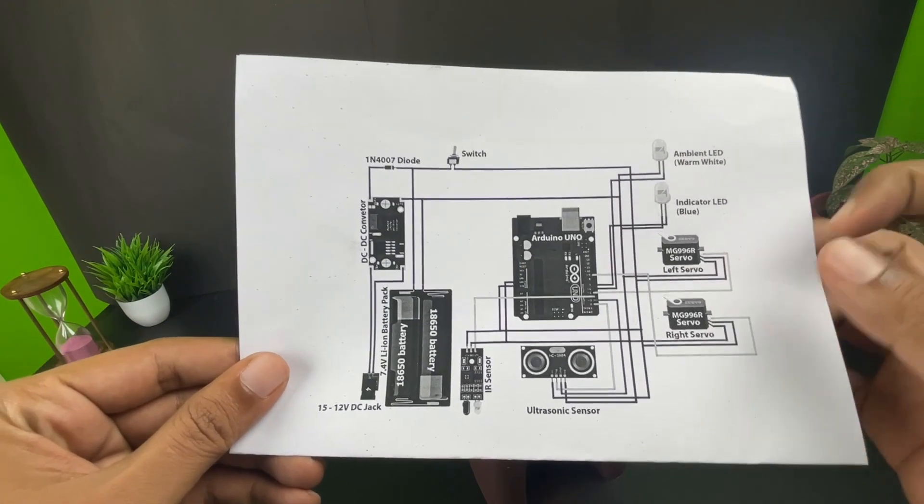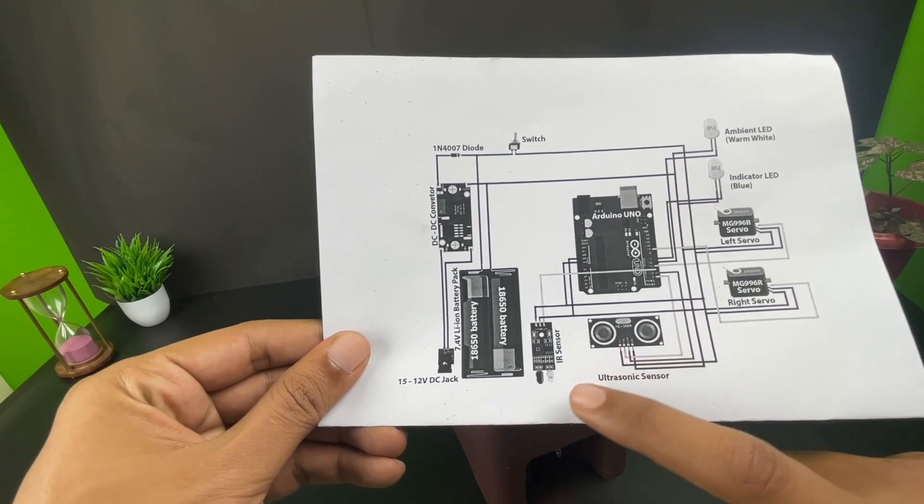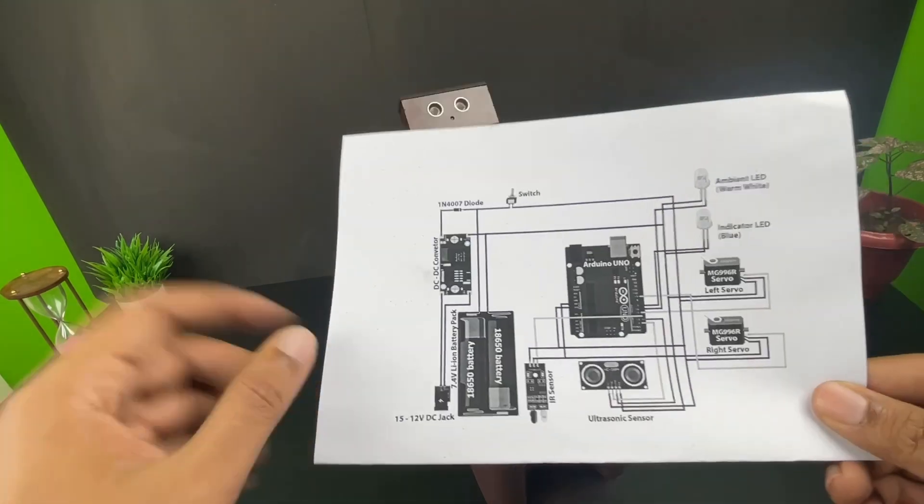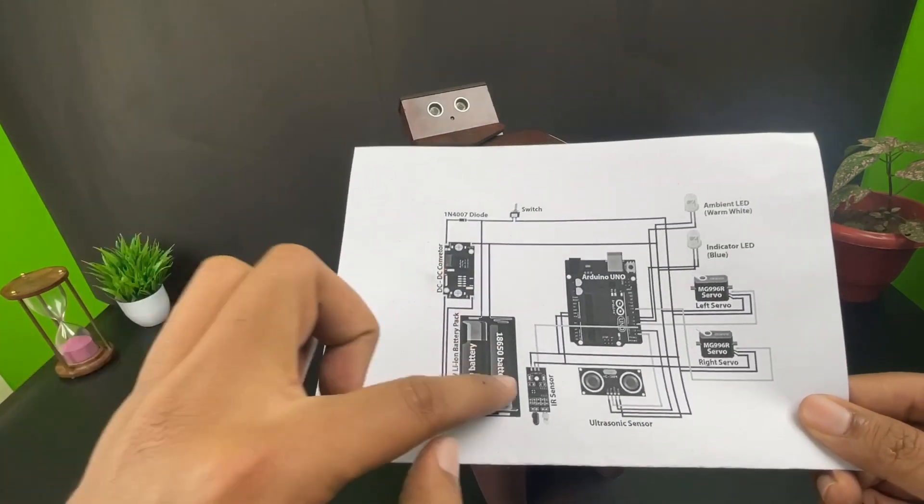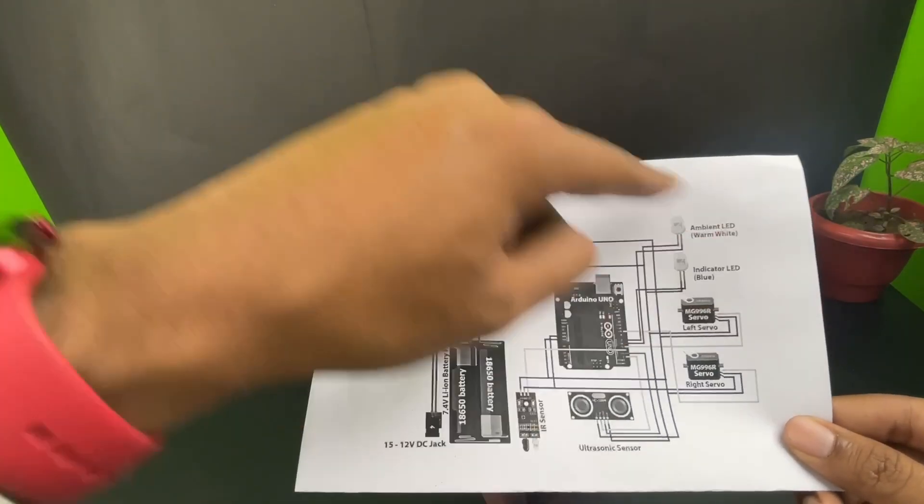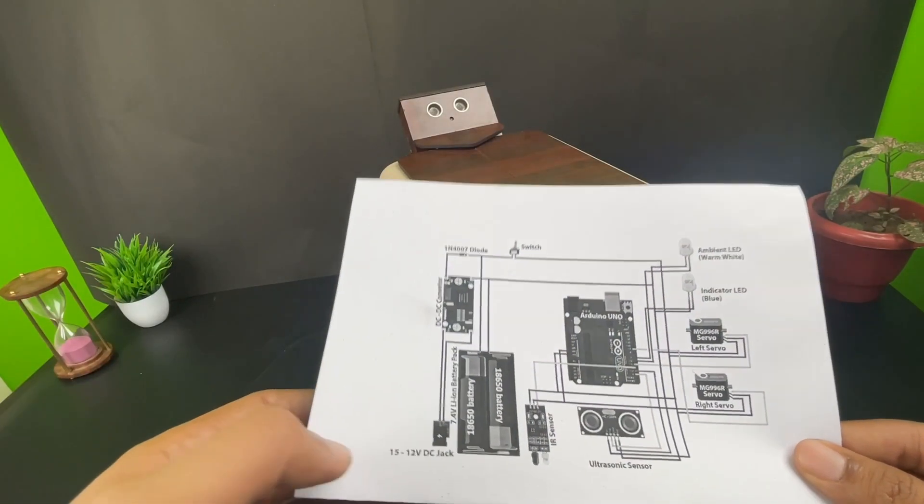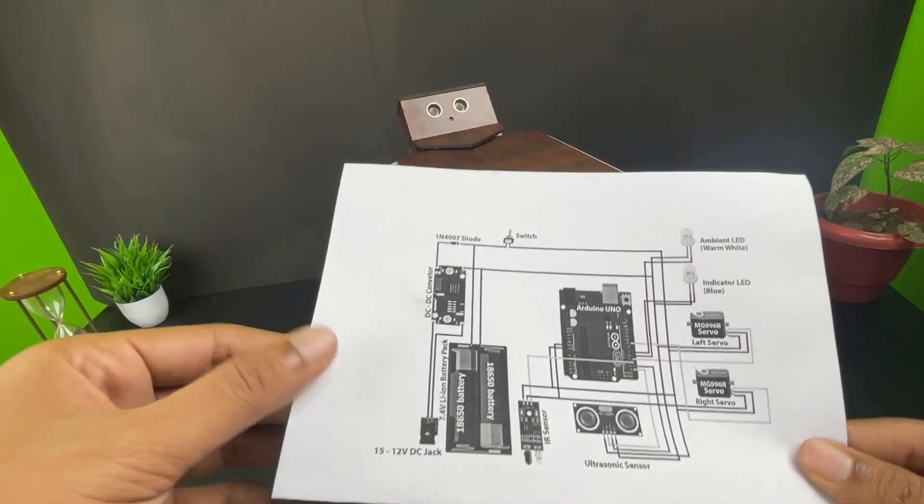You can see the two servo motors connected to Arduino. We have two sensors, one is the ultrasonic sensor and the other is an IR sensor. We are powering this whole project using the 18650 lithium batteries, and the battery is connected to a DC-DC converter which will provide 5 volts for the entire operation. Apart from that, we also have a DC power jack to charge the battery as well.